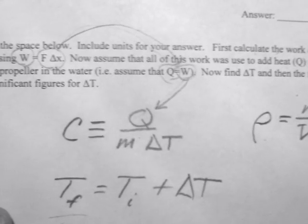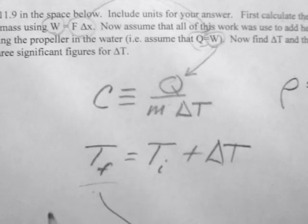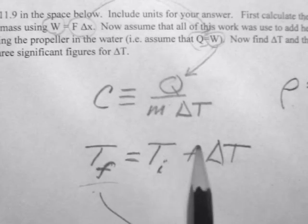You're solving for delta T first of all, and I guess just watch all of your unit conversions there. And the last part is to find the final temperature is equal to the initial temperature plus delta T.